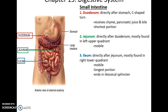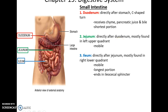The small intestine comes in three regions. There is the duodenum. The duodenum is a C-shaped turn that comes directly after the stomach, so it receives chyme, pancreatic juice, and bile, and it's the shortest portion of the small intestine.